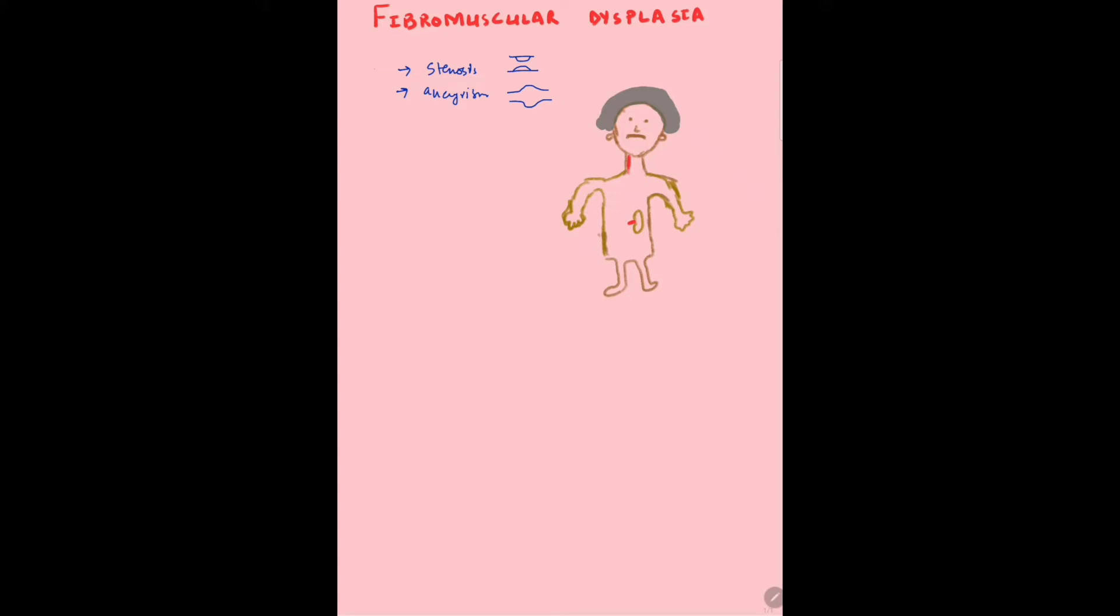The stenosis and aneurysm in fibromuscular dysplasia are usually because of the vessel anatomy. The vessel is formed by three layers: the tunica intima, the tunica media which is made up of muscular layer, and the adventitia which is connective tissue.